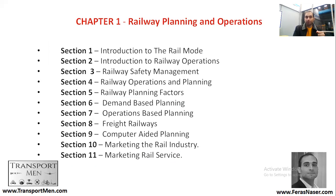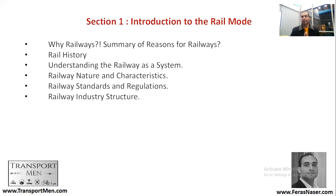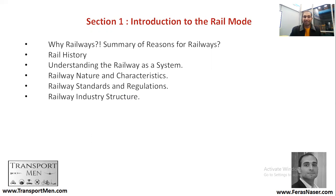Starting with Section One, introduction to the rail mode, this section has five topics. We'll be talking about why railways — why we choose railways — and a summary of the reasons for choosing the railway mode over other modes. We'll also talk about rail history, how rail started and expanded to its current position, and how we understand railway as a system, its nature and characteristics, as well as railway standards and regulations.